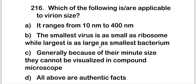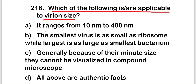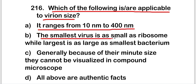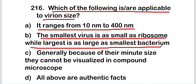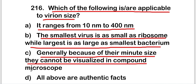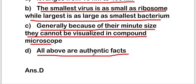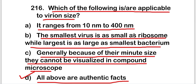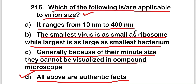The next question is: which of the following are applicable to virion size? Options are: it ranges from 10 nanometers to 400 nanometers; the smallest virus is as small as a ribosome while the largest is as large as the smallest bacterium; generally, because of their minute size they cannot be visualized in a compound microscope; or all are authentic facts. The right answer is option D, all are authentic facts about virion size.